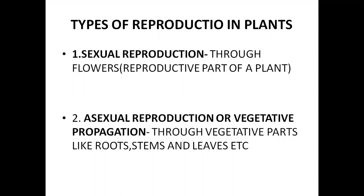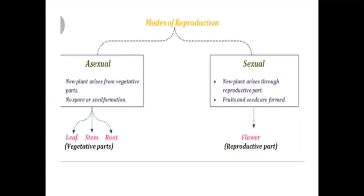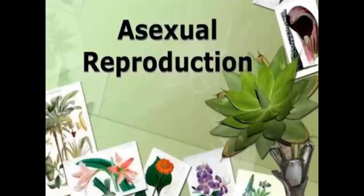Plants generally reproduce in two main ways: asexual reproduction and sexual reproduction. In sexual reproduction, plants produce with the help of their flowers. In asexual reproduction, plants reproduce from their vegetative parts like roots, stems, and leaves. These plants are able to grow without seeds.